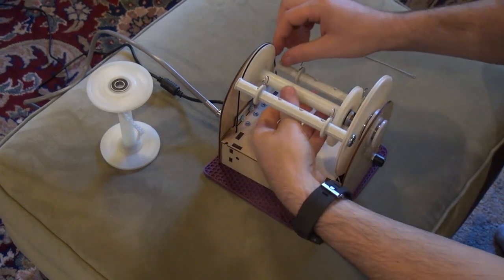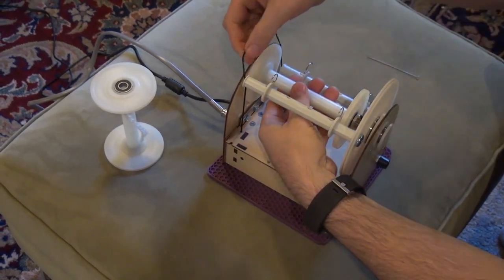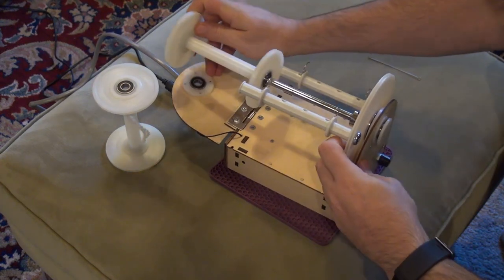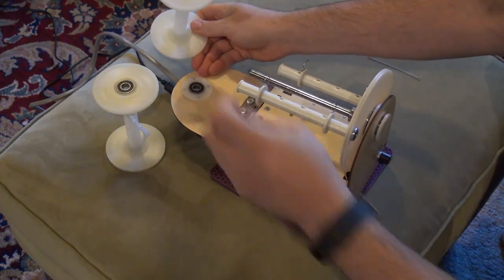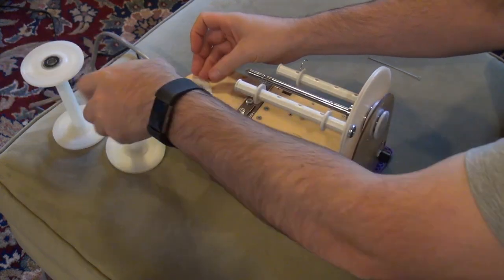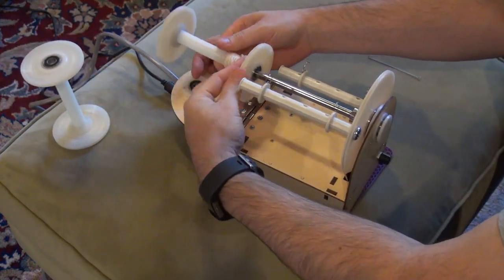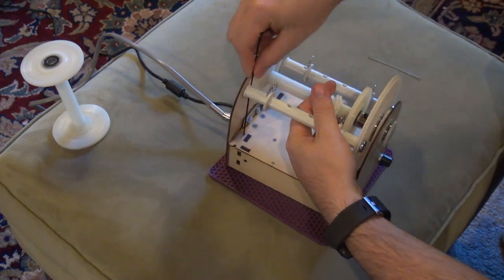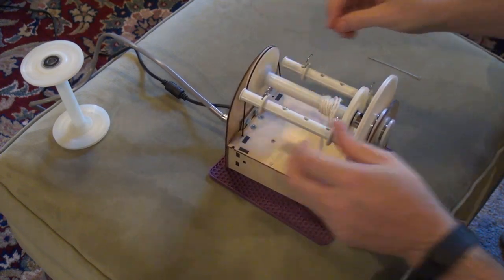One nice thing about this spinning wheel is how easy it is to change the bobbin. You just take the tension band, put it behind like that, flip down the back, slide off the bobbin like this, then you take the new bobbin and slide it on. Once you've put the tension band back on you're ready to spin.